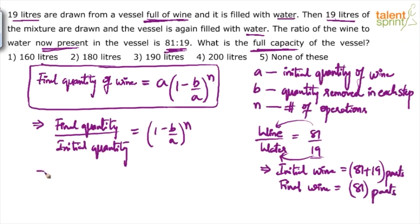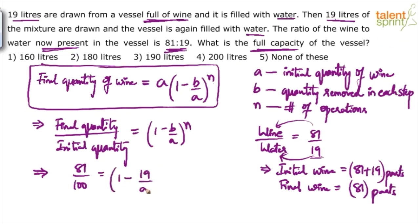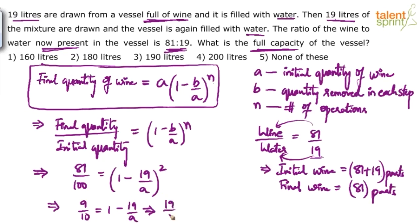Looking at the formula, on the left-hand side we have final quantity by initial quantity. Since it's a ratio, the number of liters does not matter. We can say final wine is 81 and initial quantity was 81 plus 19, which is 100. So 81 by 100 equals (1 minus 19 by a) to the power of 2. Taking square root on both sides, we get 9 by 10 equals 1 minus 19 by a. Simplifying: 19 by a equals 1 by 10, which implies a equals 19 into 10, which is 190.